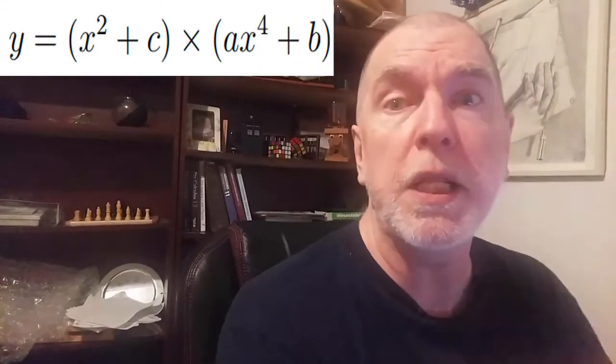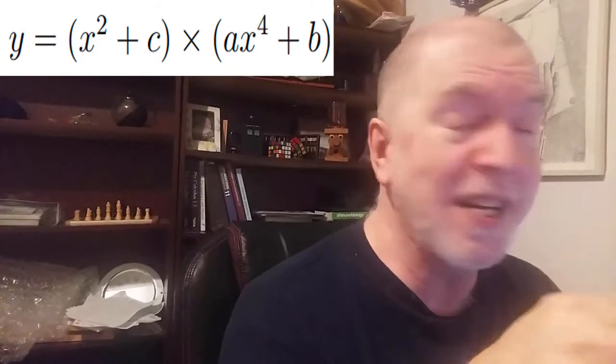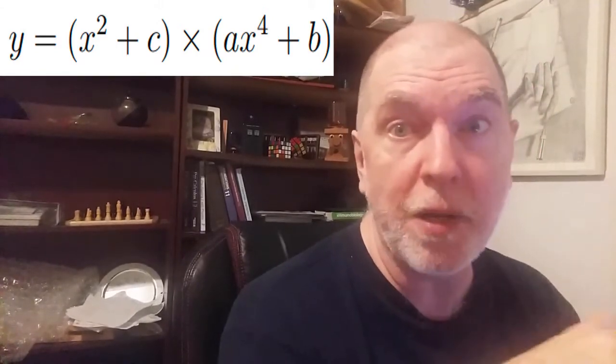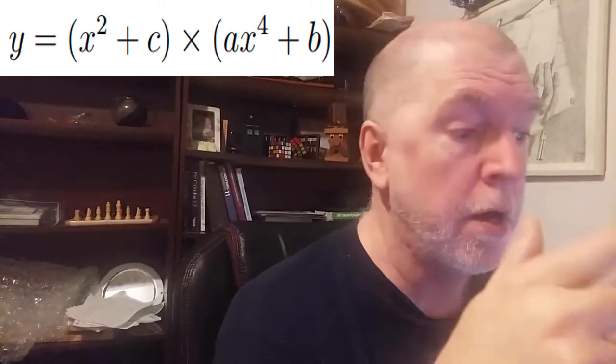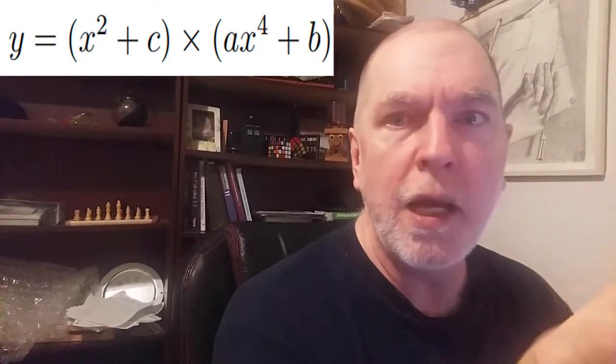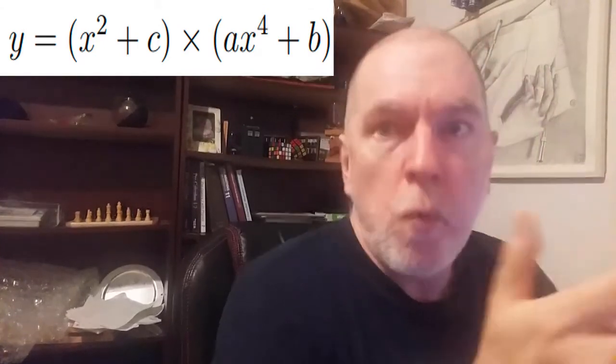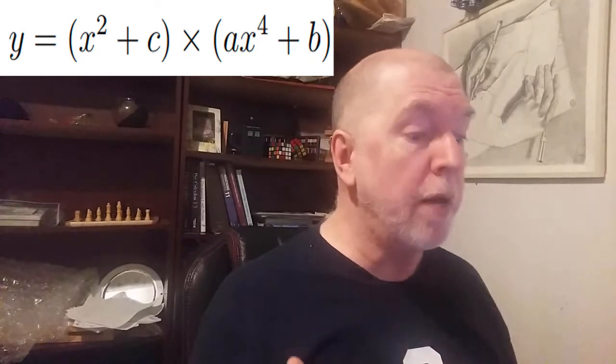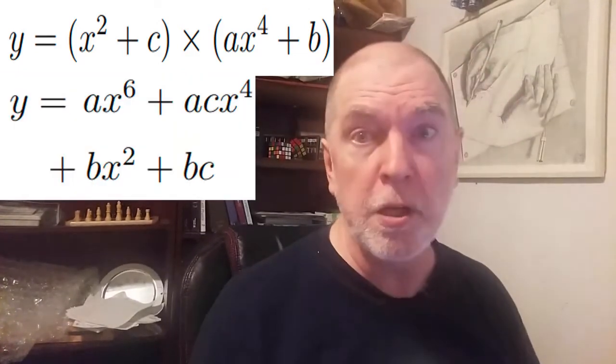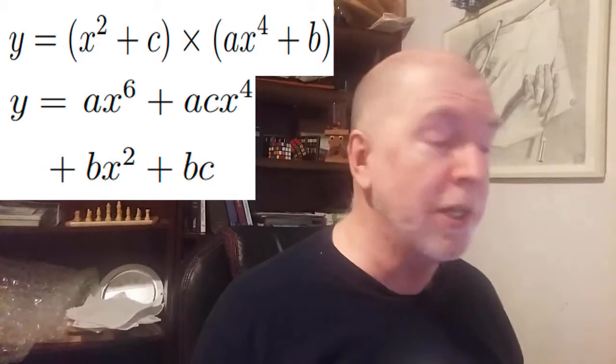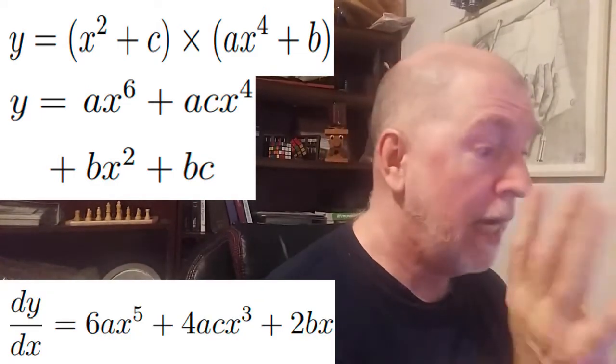What if we're dealing with products of functions? So instead of adding that x squared plus c to ax to the fourth plus b, we are multiplying those two functions. Well, I mean, we could just multiply them all out, and then we're back to where we have a succession of smaller functions, which we add together, and we differentiate that. When we do that, it looks like this.